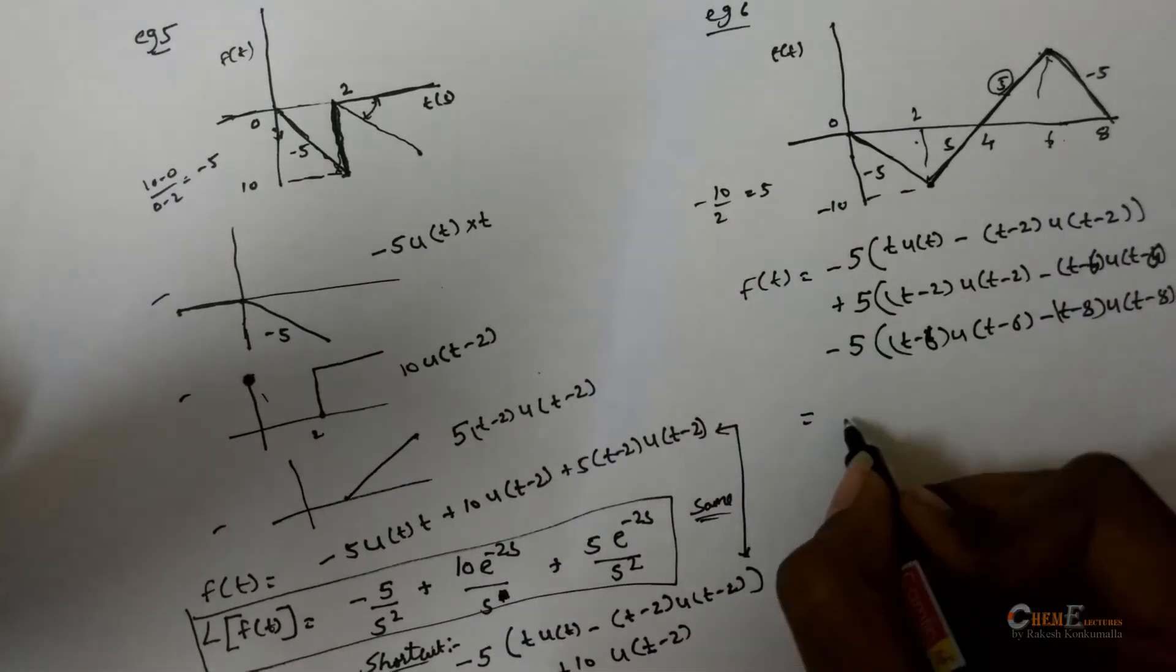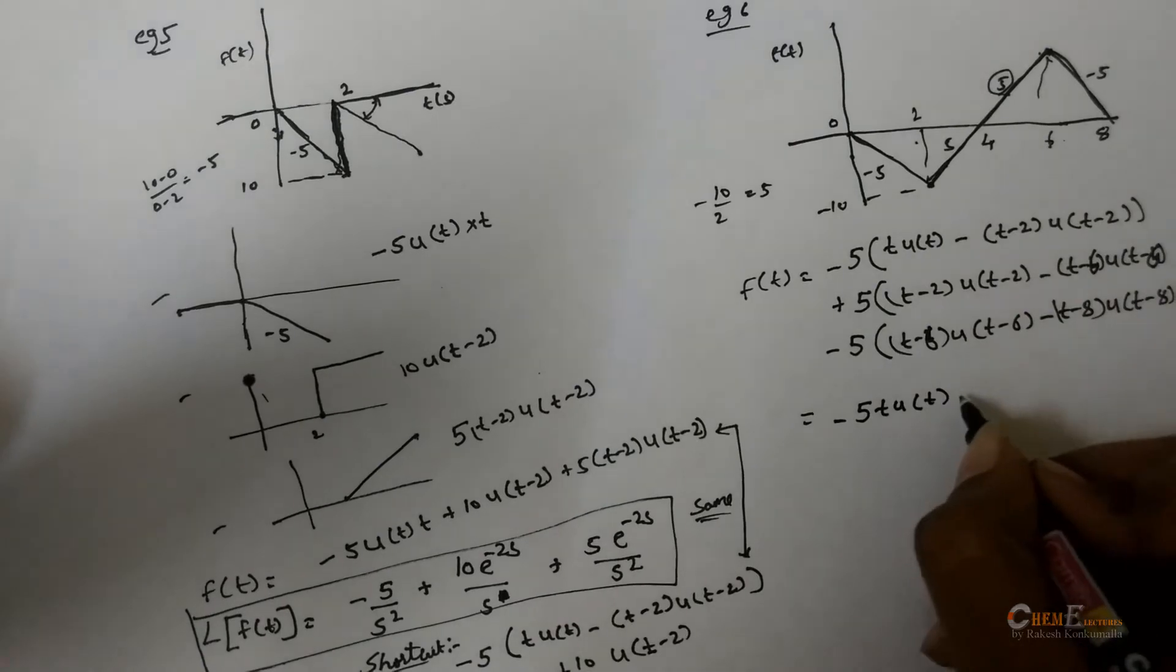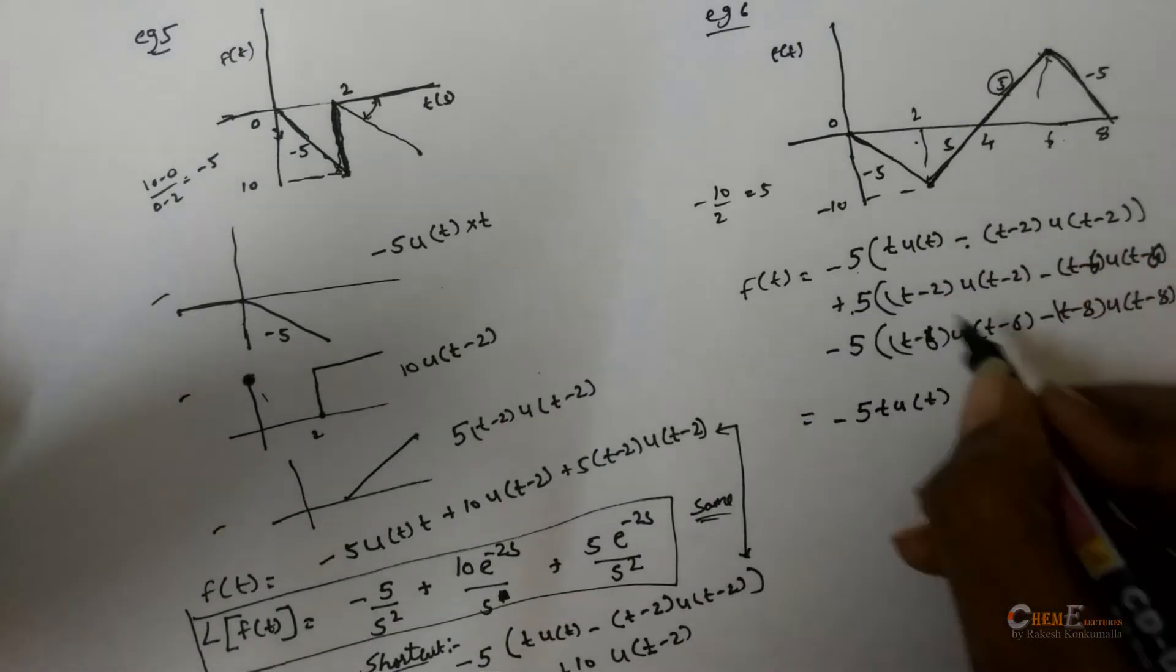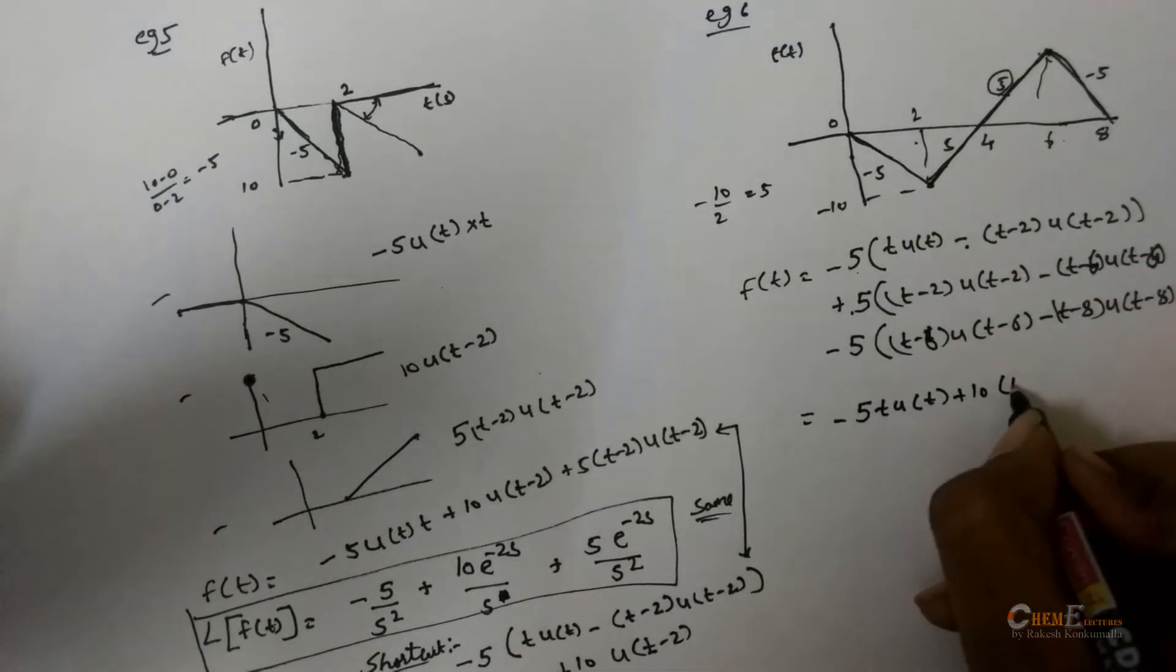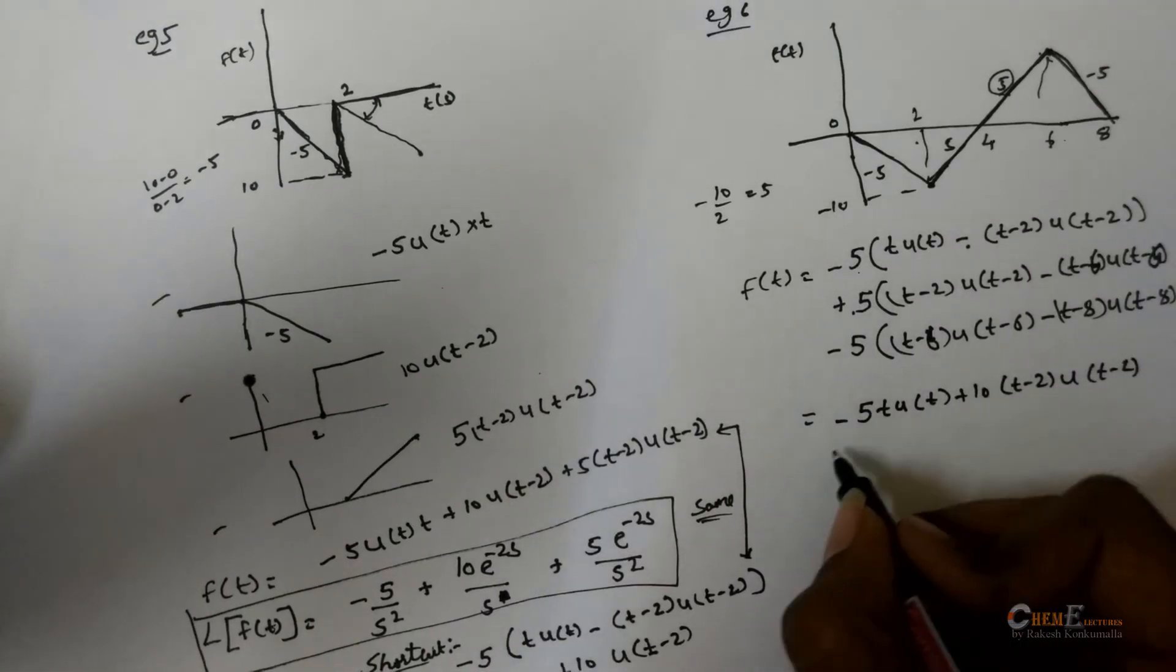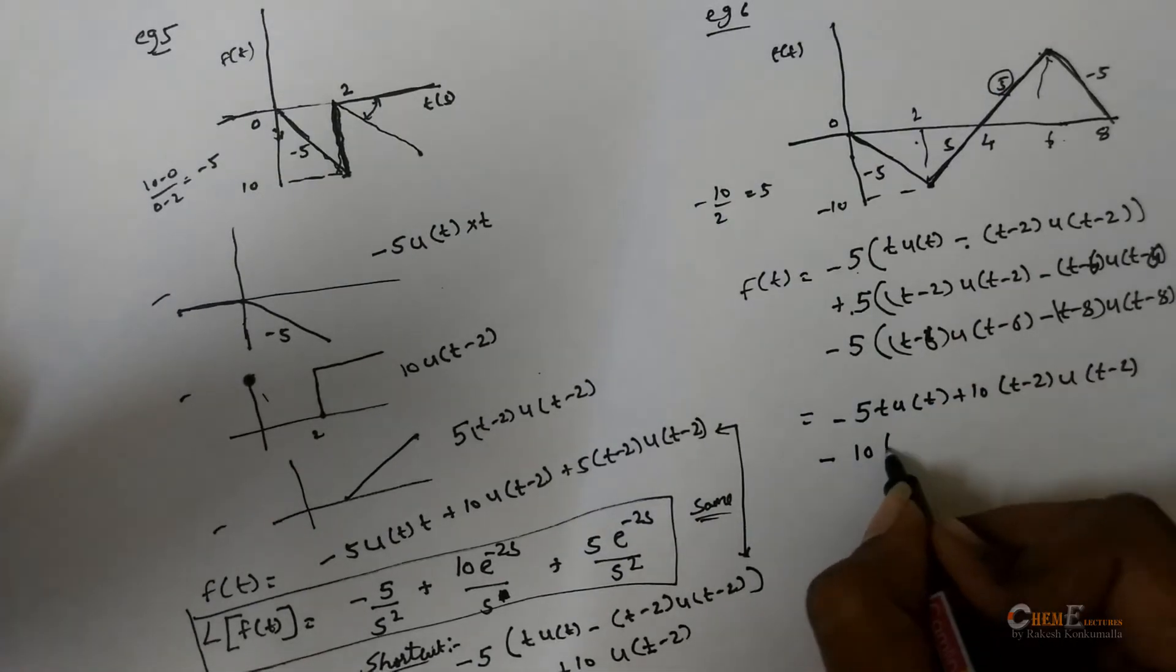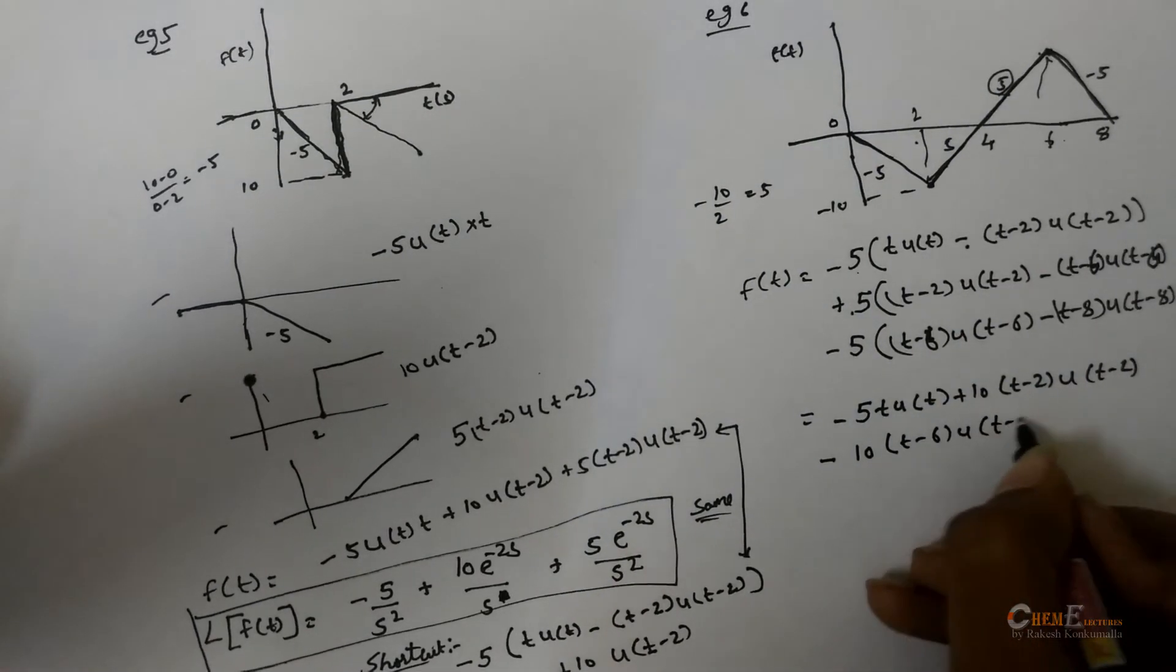Just rearrange. Minus 5t, u, here it will be plus 5 plus 5, so 10, t minus 2, u, minus 5 and minus 5, so minus 10, t minus 6, u.